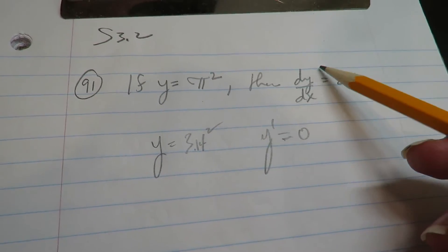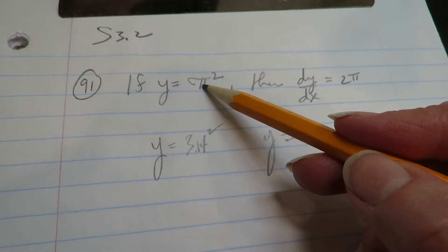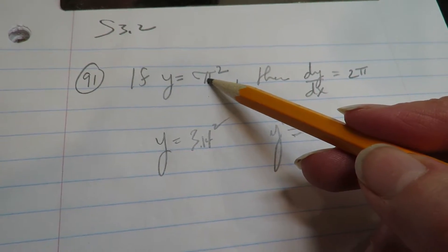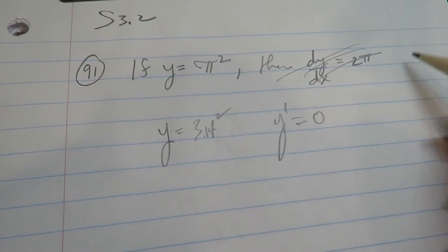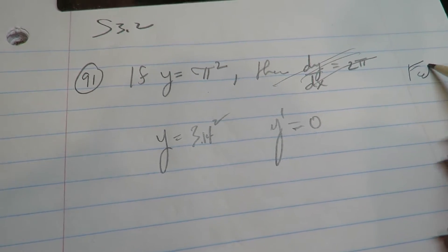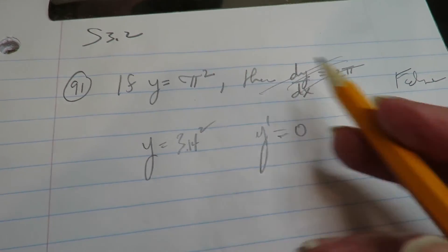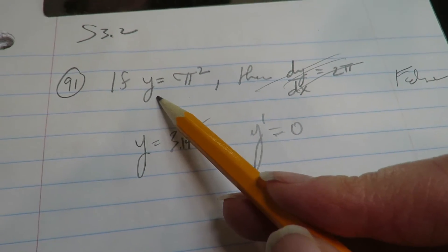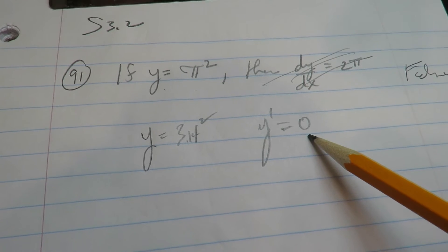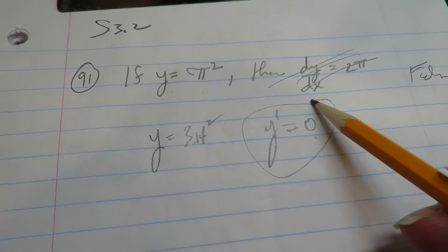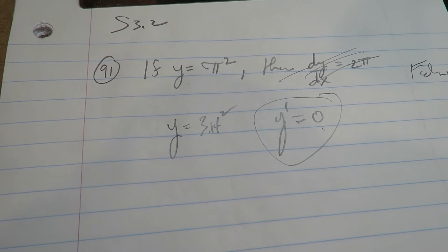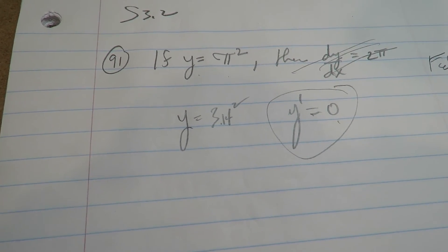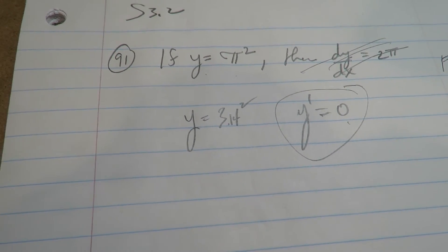It's not a variable. Pi is known — it's not unknown. This is totally wrong. This is false. The correct answer for this would be zero. That is what the derivative is because it's a number, it's a constant.